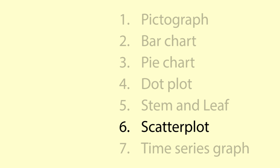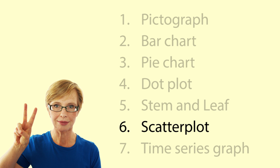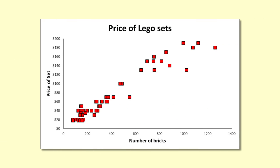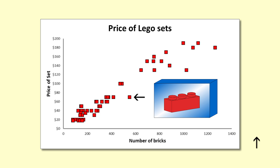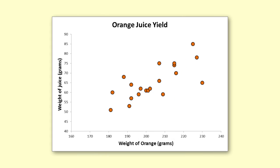Scatter plot. Scatter plots are used for showing the relationship between two numerical variables. Each dot represents one observation or thing. In this case, each dot represents one set of Lego and shows the relationship between the number of pieces in the set and the price. In this example, we are looking at the relationship between the weight of an orange and the weight of juice it yields. Each dot represents one orange and its position corresponds to the weight of the fruit and the weight of the juice.